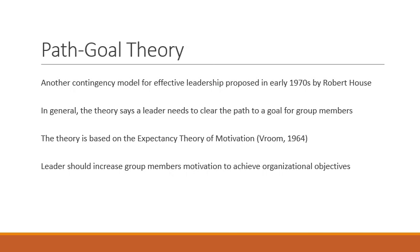Path goal theory of leadership is another contingency model developed in early 1970s by H. Robert. The theory specifies the effective leadership behavior needed to achieve high productivity and raise morale of employees in a given situation. In general, path goal theory proposes that the leader's role is to clear the paths that teams use to achieve objectives.